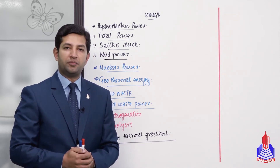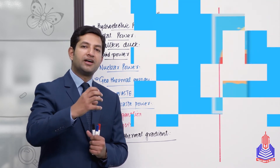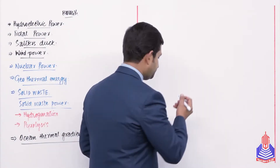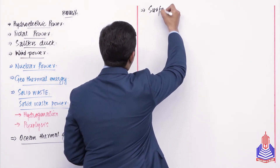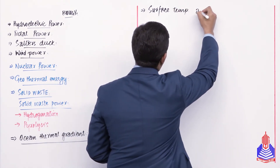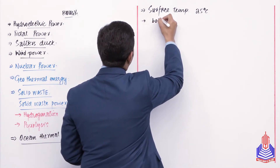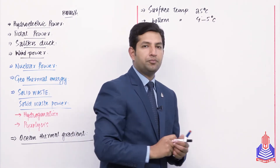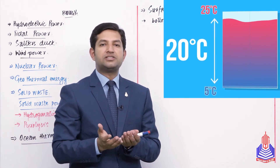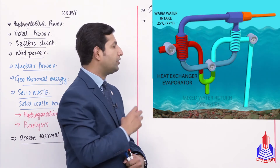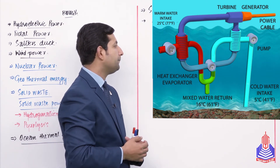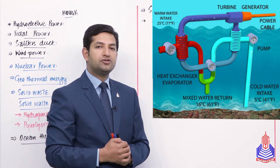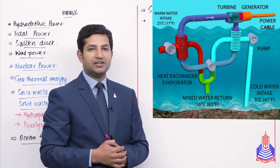Ocean thermal energy conversion — students, if you think about these words, you realize that due to temperature fluctuations in the ocean, a gradient develops. Let's see how this gradient develops. Students, remember that at the surface, the temperature is around twenty-five degrees Celsius, and at the bottom, the temperature is almost four to five degrees Celsius. Because of these two figures, the water that is already warm at the surface will start to evaporate rapidly. These vapors rising upward will be used to run turbines.